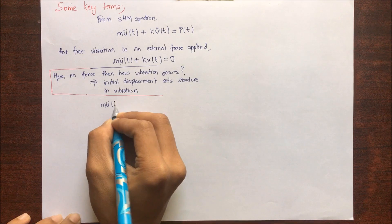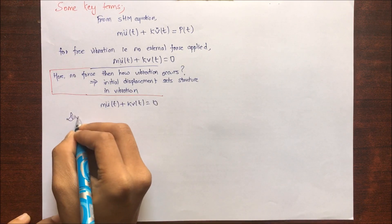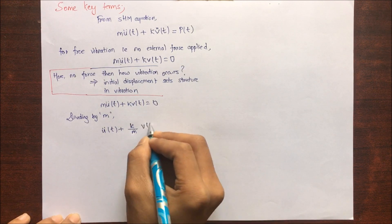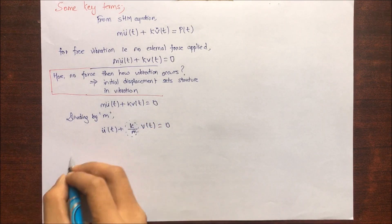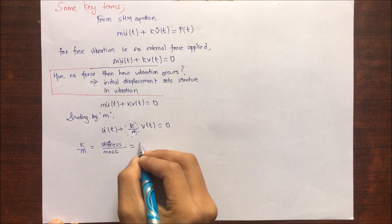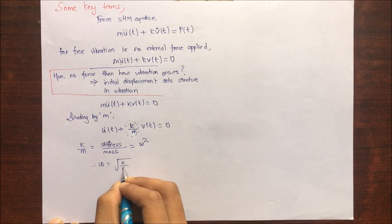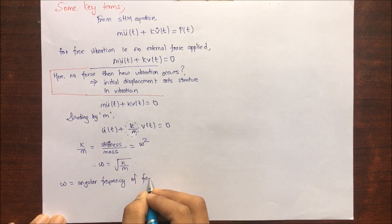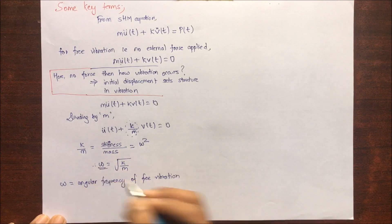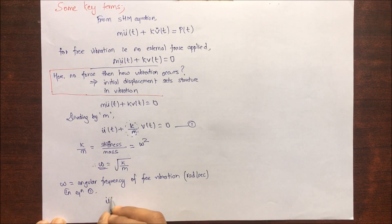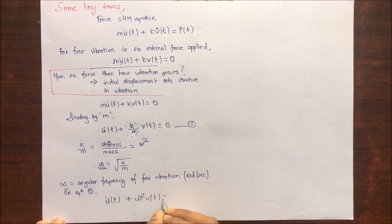Dividing the free vibration equation by mass, we get: Ü + (k/m)·V = 0. Replacing k/m with ω², we get ω = √(k/m), where ω is the angular frequency of free vibration with units of radians per second. The equation becomes: Ü + ω²·V = 0, or equivalently, acceleration equals minus ω² times initial displacement.